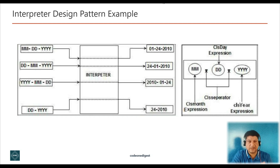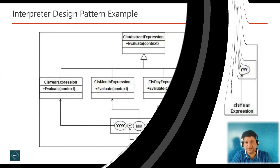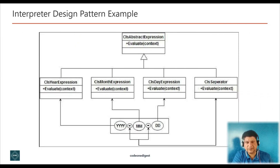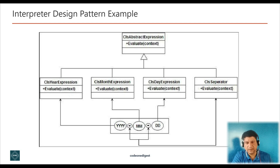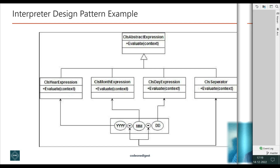There are two types of classes: expression classes which contain the logic, and context classes which contain the data. All the expression parsing is defined in different classes, and all these classes inherit from a common interface — the abstract expression — with a method 'evaluate'. The evaluate method takes a context class which has the data, and parses data according to the expression logic. For instance, class YearExpression replaces 'yyyy' with the year value, and class MonthExpression replaces 'mm' with the month value, and so on.